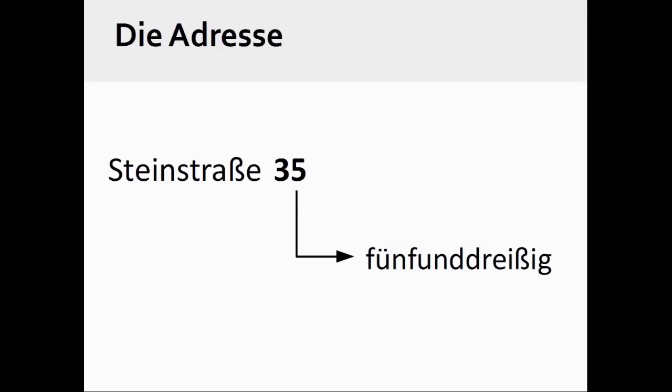In Germany, the house number in an address is listed after the street where the house is located. Steinstraße 35. When relating an address in German, one forms the number in the manner taught earlier in this presentation.